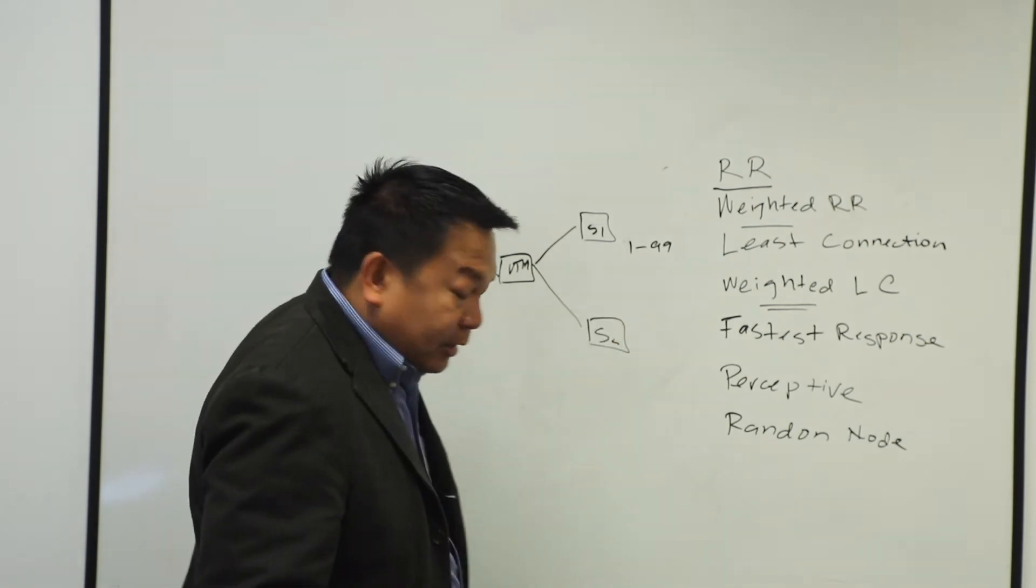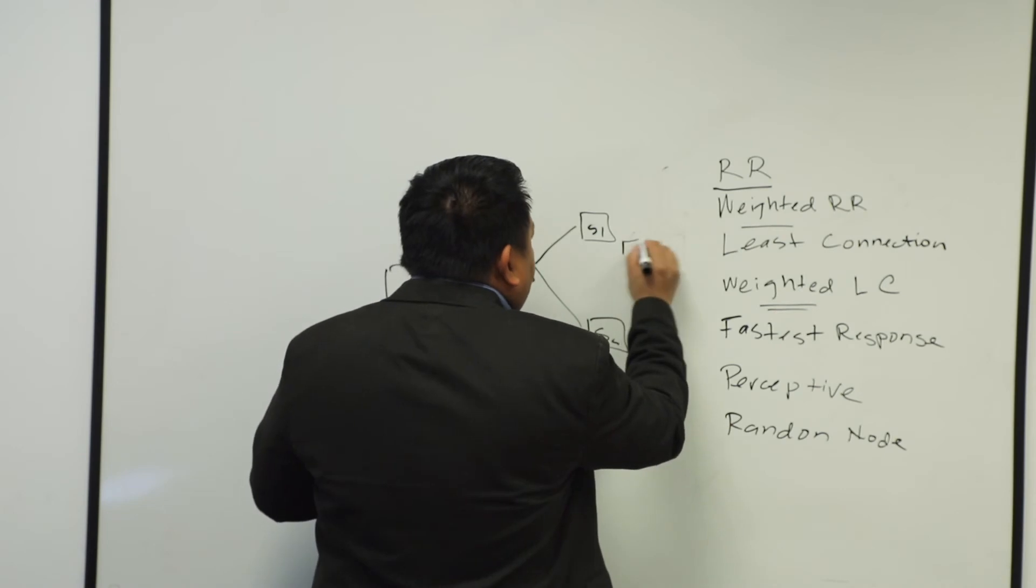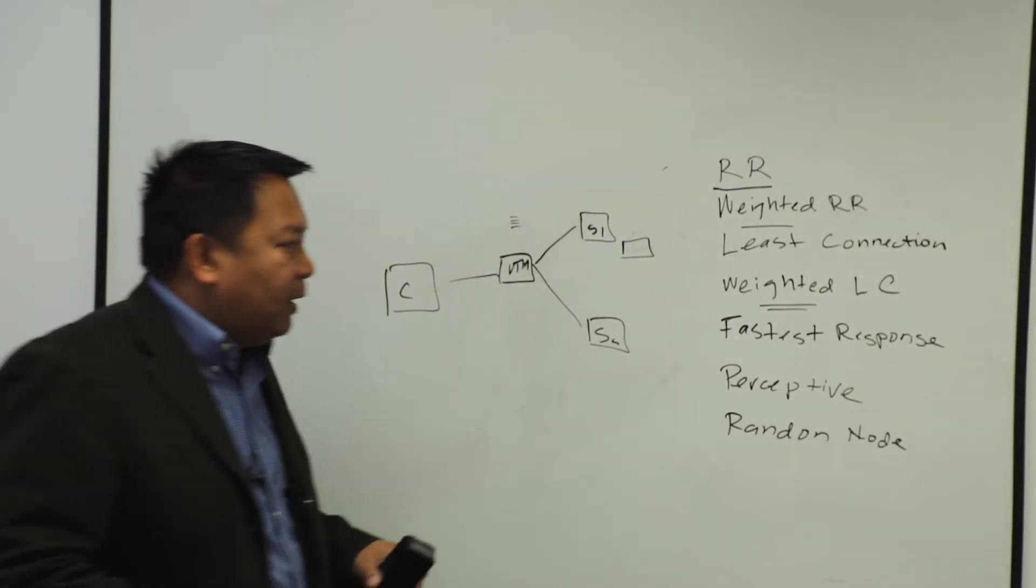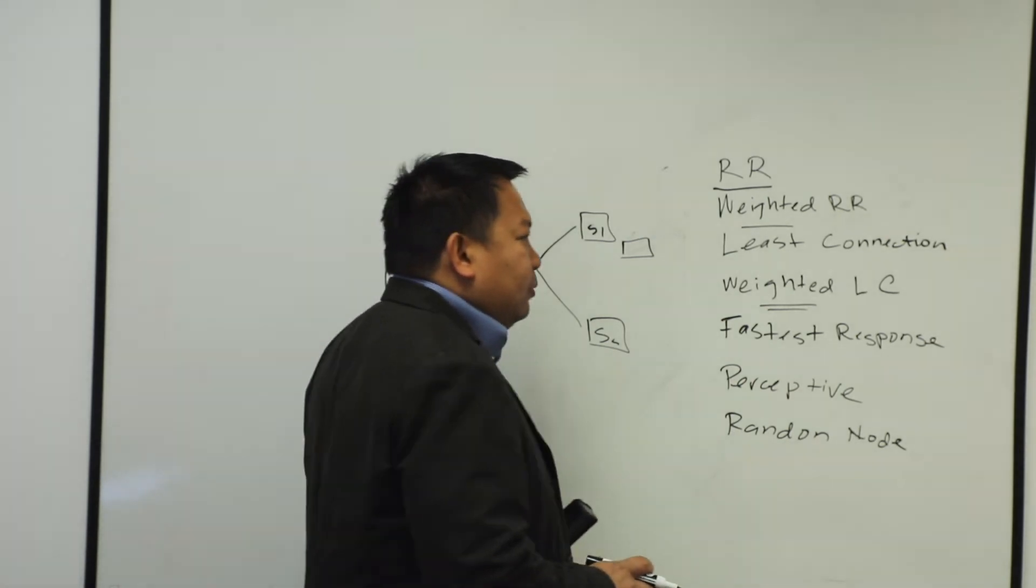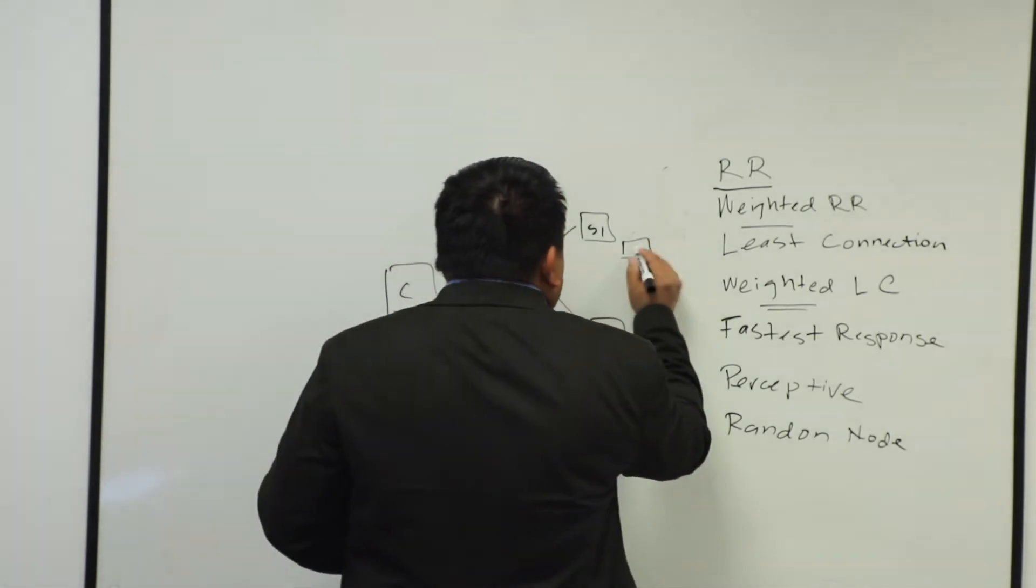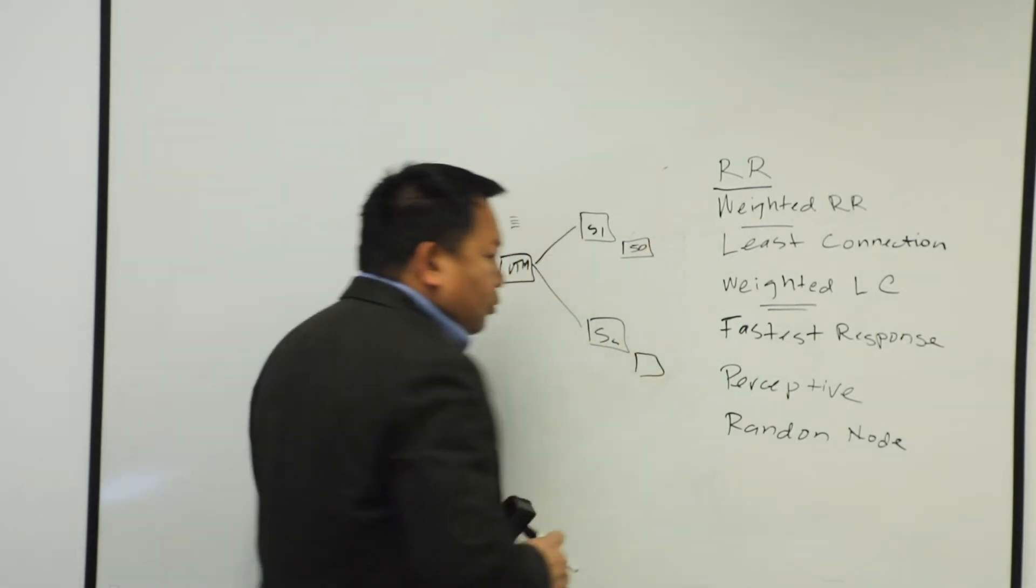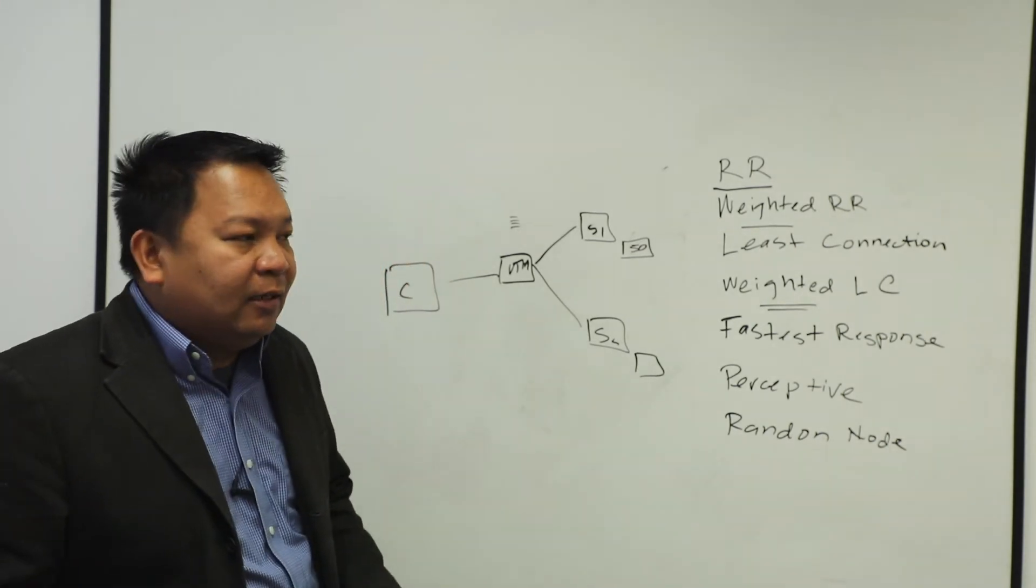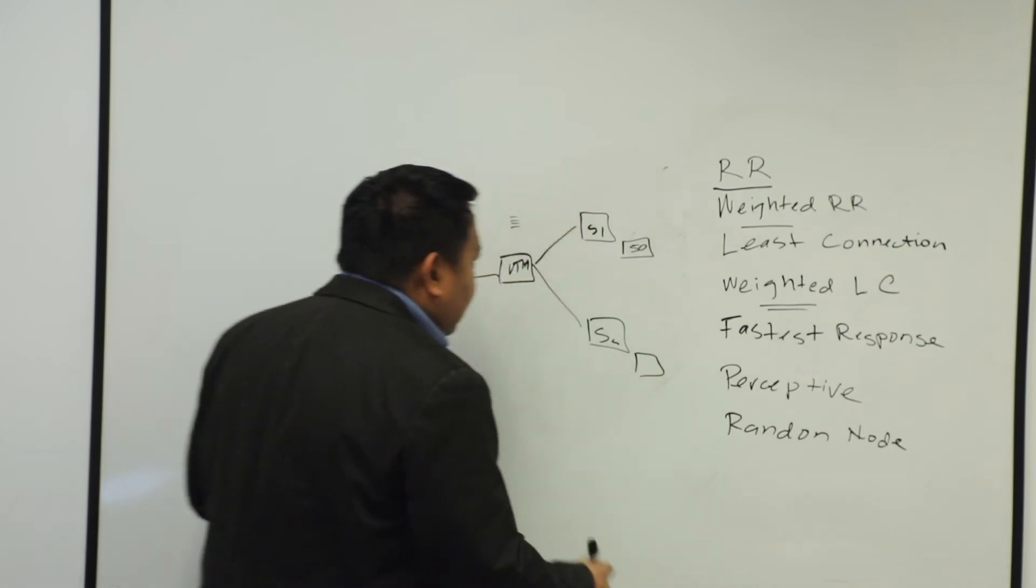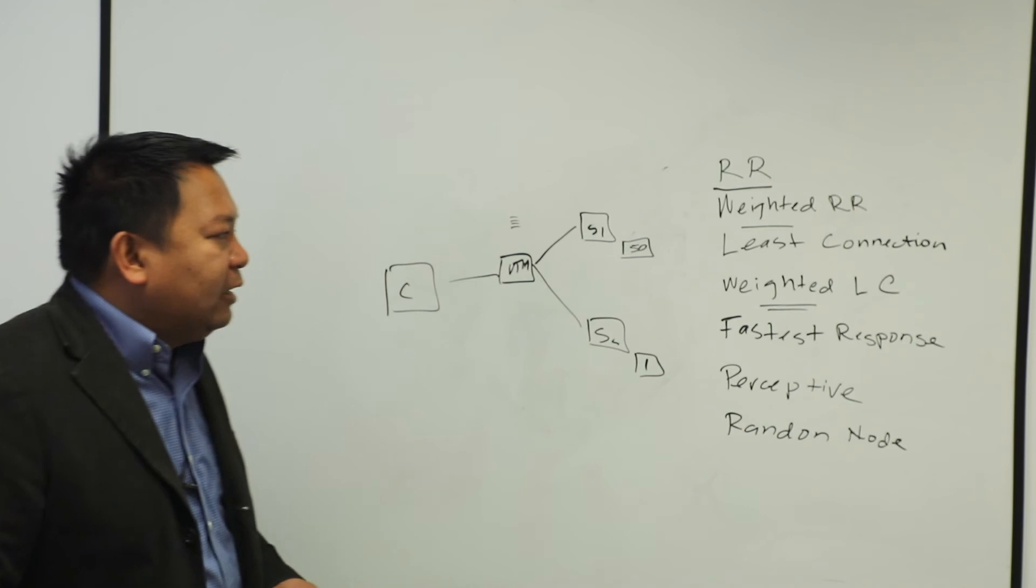You can define, depending on the capacity of your server. Let's say if this time server one is not very powerful, it's been there, it's one of the first generation servers that you have purchased in the past, maybe put 50. And then server two, maybe you just purchased one because one of the servers died, CPU might have burned out or anything. You could define this as one. So that is your weighted least connection.